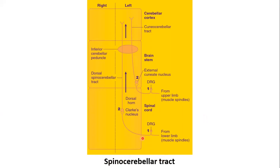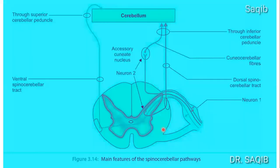For the spinocerebellar tracts — anterior and posterior — here I have two pictures. First, identify these are the first order neurons, the dorsal root ganglion. This is the spinal nerve and this is the posterior root, the posterior dorsal root ganglion — the first order neuron. This is the second order neuron, the nucleus dorsalis, the Clark's column. Here also is the accessory cuneate nucleus. Then this passes through the inferior cerebellar peduncle to reach the cerebellum.